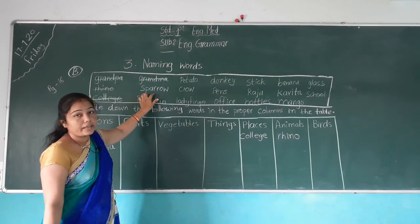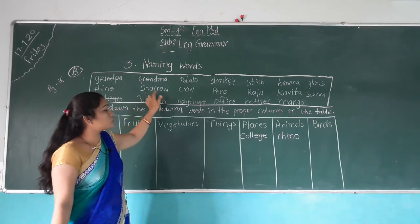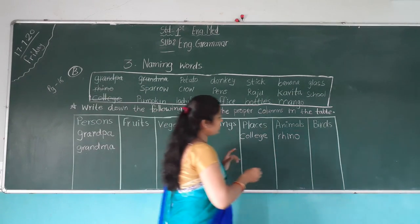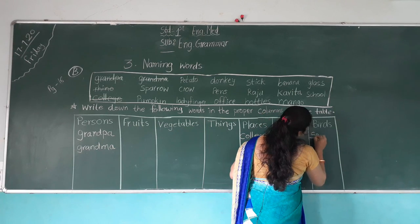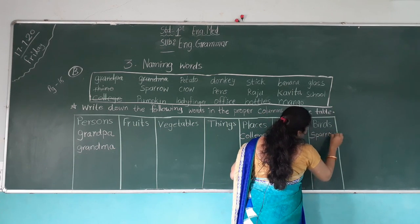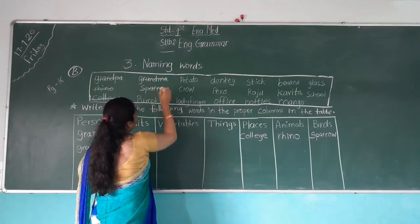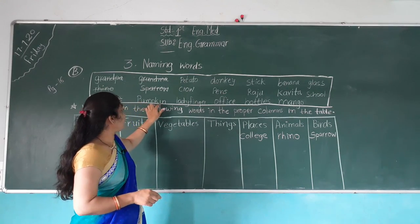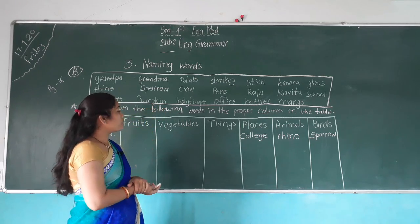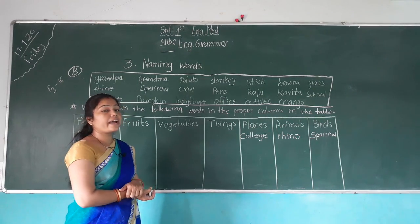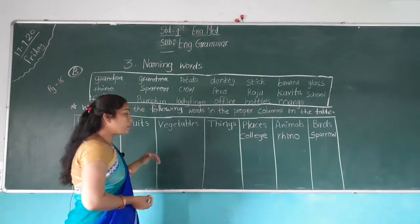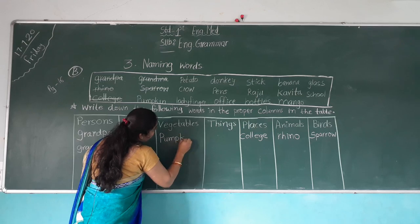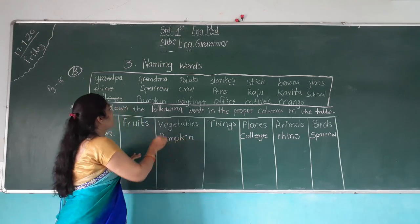S-P-A-R-R-O-W — Sparrow. Sparrow is the name of a bird, so we write it in the birds column. And cut this. Read this spelling — P-U-M-P-K-I-N — Pumpkin. Pumpkin is a vegetable, so we write it in the vegetables column. And cut this.